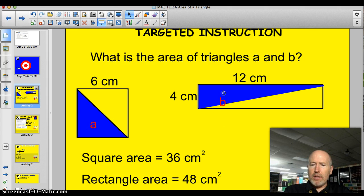Well, if you said 1 half of 36 square centimeters, you are correct because the triangle is exactly half of the square. So if the square is 36, half of 36 is 18. Half of 48 is 24 square centimeters. Kind of cool, huh? Hope I made you think about that one.